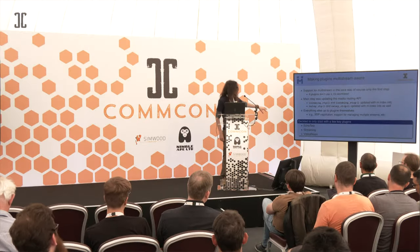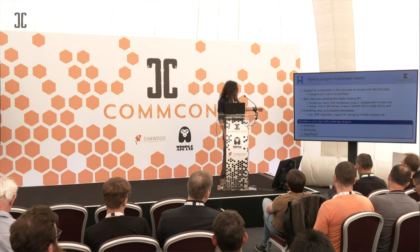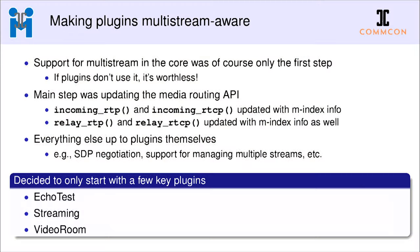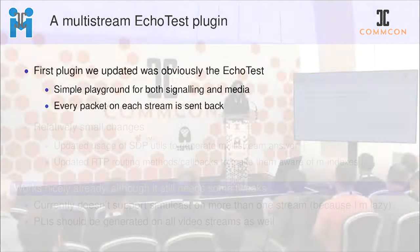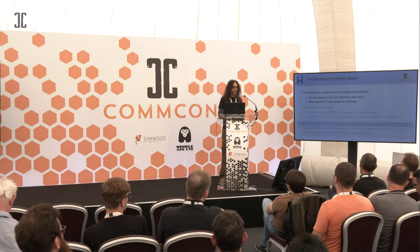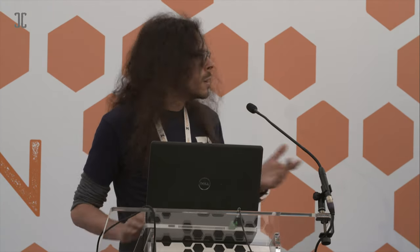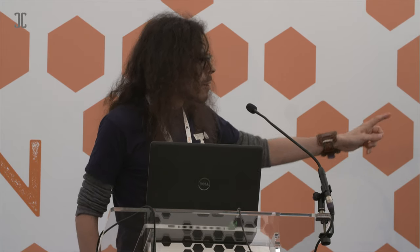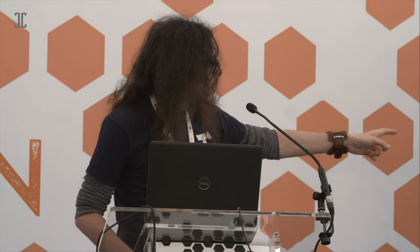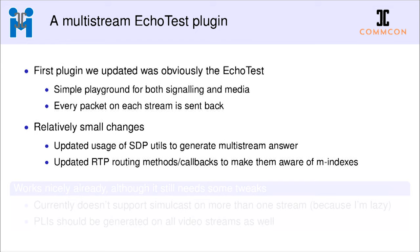We decided to start with a few plugins. The echo test gave a simple playground to test things — as the name suggests, whatever you send it, it sends back on the same M-lines. It was simple to update to be aware of multiple streams when negotiating the SDP, and to use M-line information in RTP routing — any packet received on the fifth M-line is sent back on the fifth M-line. This let us verify packets were being routed correctly both in and out.